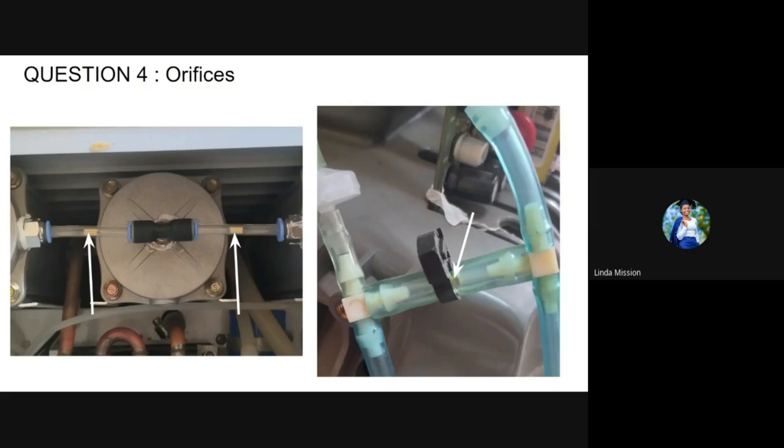The host thanks Linda, reiterating that just like the check valve, the orifice is very important and must always be present in machines designed to use one. Two polls are launched: the first asks 'Have you ever replaced the orifice-containing tubing with one without orifices?' The second asks what happened to the oxygen concentration after doing so.